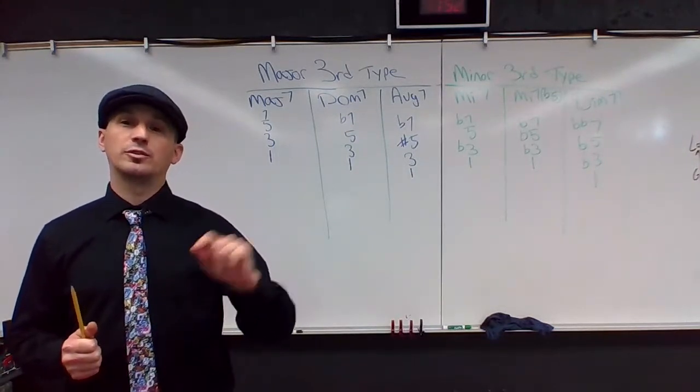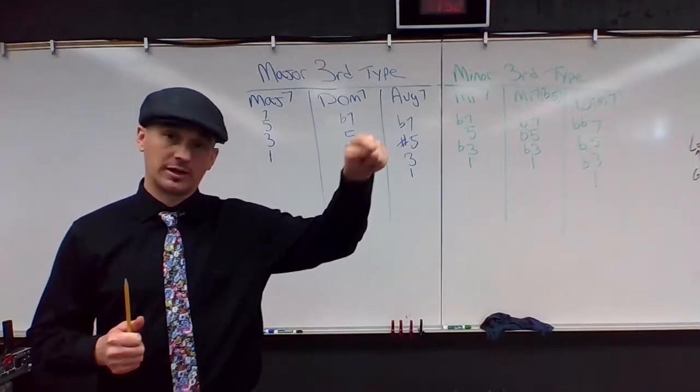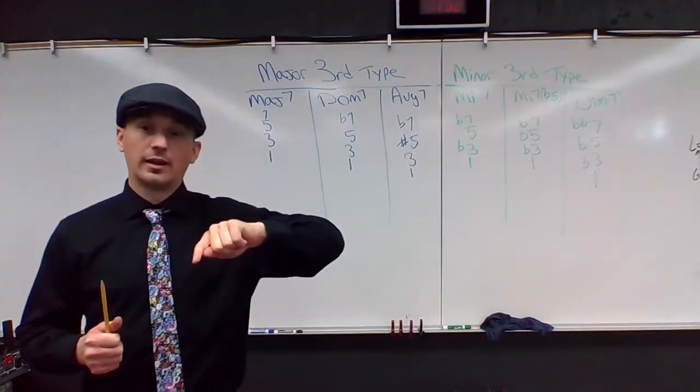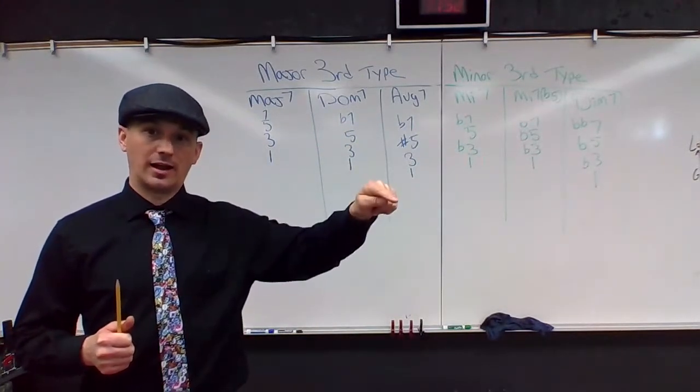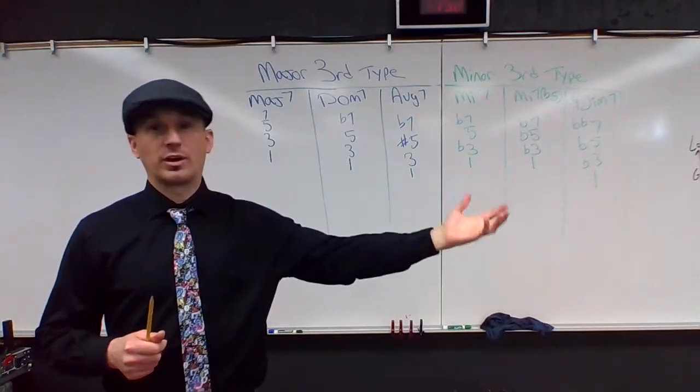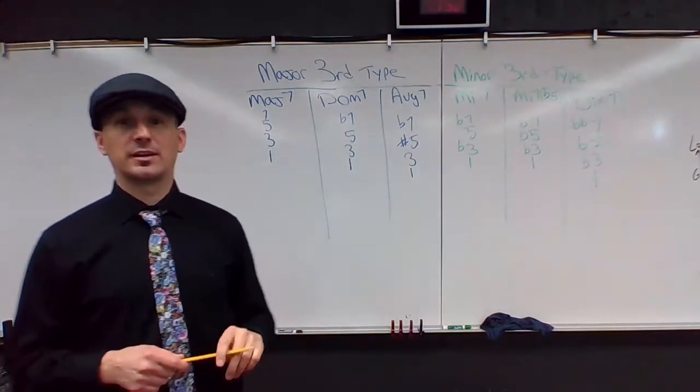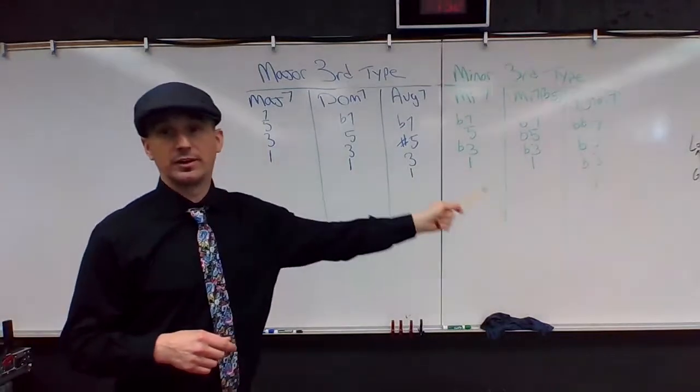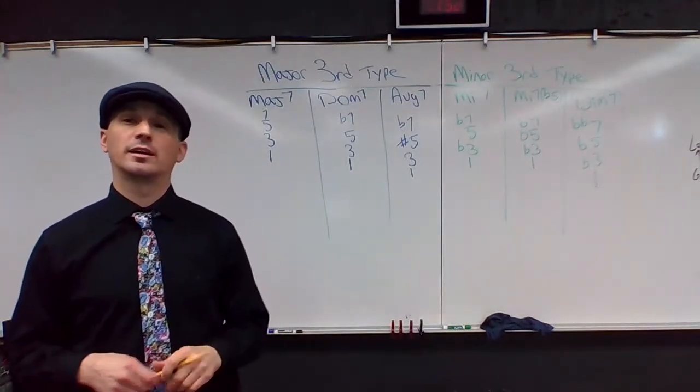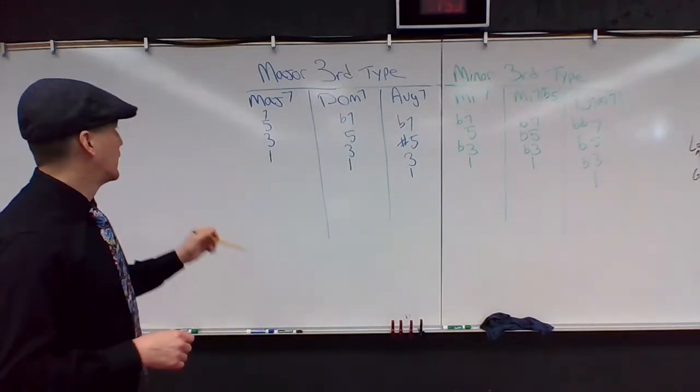Now we're going to bring that seven over. So if we continue that tertian harmony all the way up the major scale, one, three, five, and now seven, we bring that over, and that's going to actually give us six different possibilities for harmony. Six different ways of organizing those four notes.